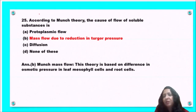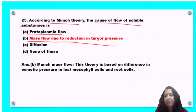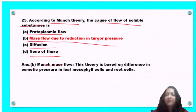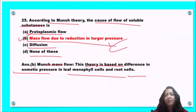Next question: according to Munch's theory, the cause of flow of soluble substances is protoplasmic flow, mass flow due to reduction of turgor pressure, diffusion, or none of these? Munch's theory is based on the difference in osmotic pressure in leaf mesophyll cells and root cells. So option B, mass flow due to reduction of turgor pressure, is the correct answer.